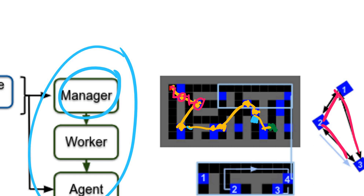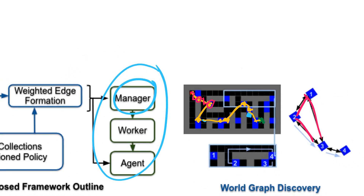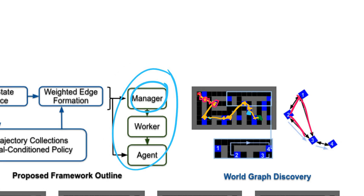So if you have the world graph — this set of states and how easily they are reachable between each other — you can very easily do a hierarchical reinforcement learning approach where the manager plans on the world graph and the worker implements the fine-grained actions. There is already a method that does this; this paper uses feudal networks. So the real question is: how do they learn the world graph?